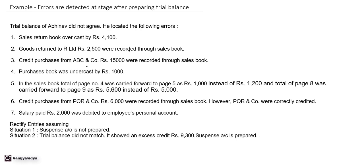First: sales return book overcast by Rs. 4,100. Overcasting is a totaling error. What has happened is instead of the actual total of Rs. 1,000 in the sales return book, it was recorded as Rs. 5,100, causing the sales return account to show an excess of Rs. 4,100. Sales return account will have a debit balance.